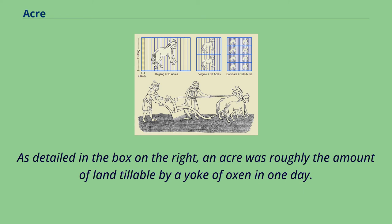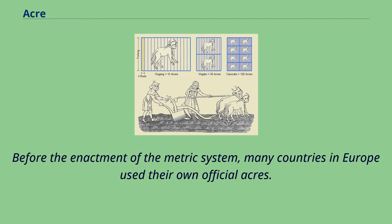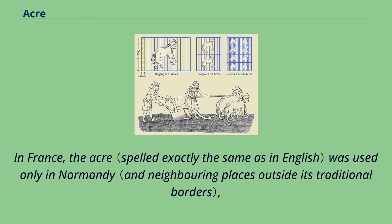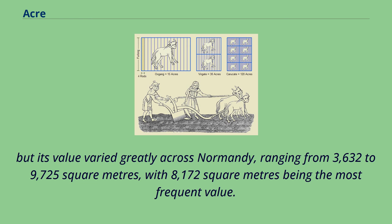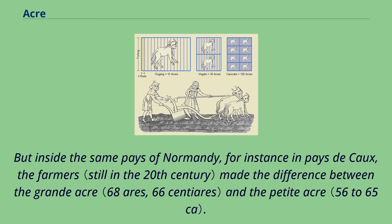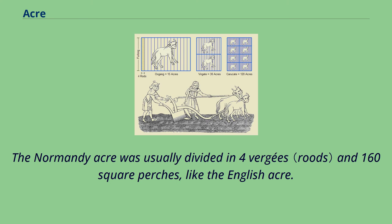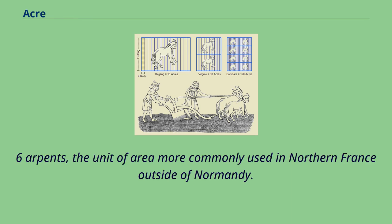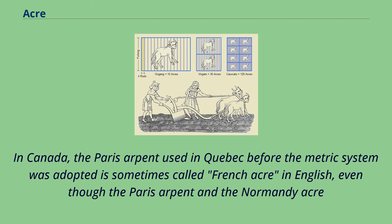Before the enactment of the metric system, many countries in Europe used their own official acres. In France, the acre was used only in Normandy, but its value varied greatly across Normandy, ranging from 3,632 to 9,725 square meters, with 8,172 square meters being the most frequent value. Inside the same pays of Normandy, for instance in Pays de Caux, farmers made the difference between the grand acre and the petite acre. The Normandy acre was usually divided into 4 verges and 160 square perches, like the English acre, and was equal to 1.6 arpent, the unit of area more commonly used in northern France outside of Normandy. In Canada, the Paris arpent used in Quebec before the metric system was adopted is sometimes called French acre in English, even though the Paris arpent and the Normandy acre were two very different units of area in ancient France.